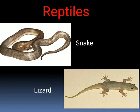Reptiles. Animals with scales or shells on their body are called reptiles. For example, snake and lizard.